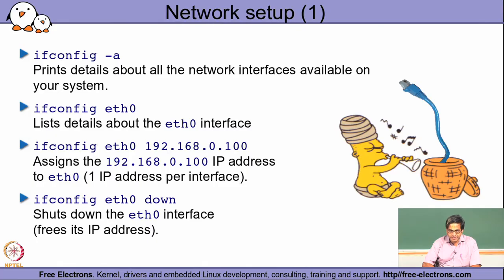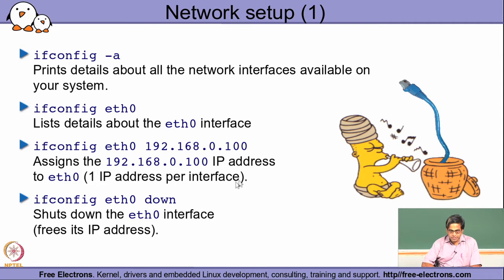If I want to specifically assign an IP address to an interface, I would use the ifconfig command: ifconfig followed by the name of the interface. For example, to assign an IP address to eth0: ifconfig eth0 192.168.0.100. This will assign that IP address to the interface, and after the interface is brought up, any packet in the network with destination address 192.168.0.100 will be received by this particular system.